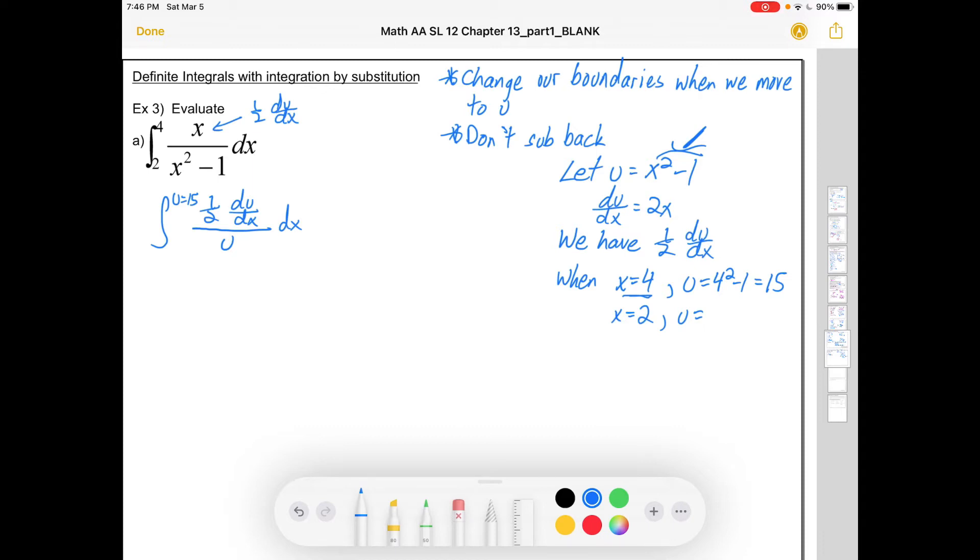That bottom boundary, the x equals 2. Well let me put in 2 into this u equals. It's 2 squared minus 1. There we go. It's 3. And I'm going to take the time to write u equals for each of them so that I'm very clear to myself about what kind of values we're talking about.